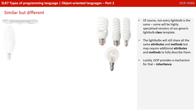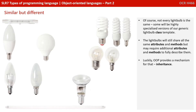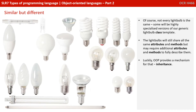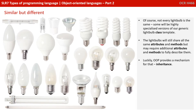Not every lightbulb is the same. Some will be highly specialised versions of our generic lightbulb class template. The lightbulbs will still share all the same attributes and methods, but may require additional attributes and methods to fully describe them. Luckily, OOP provides a mechanism for this, and it's known as inheritance.